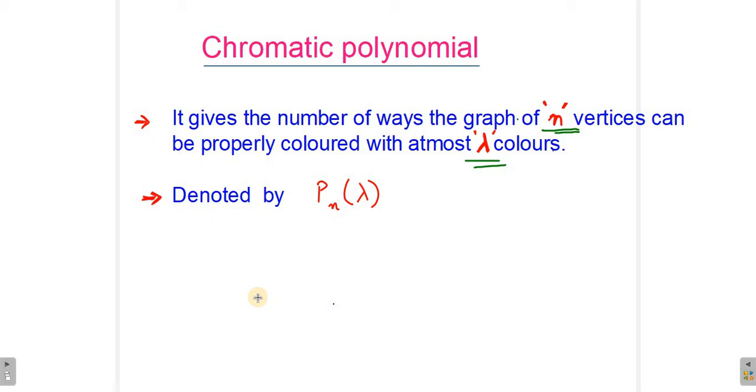Chromatic polynomial is the number of ways a graph of n vertices can be properly colored with at most lambda colors. So let's say there is a graph G which has n vertices and we have lambda number of colors. This lambda is the number of colors that we have.